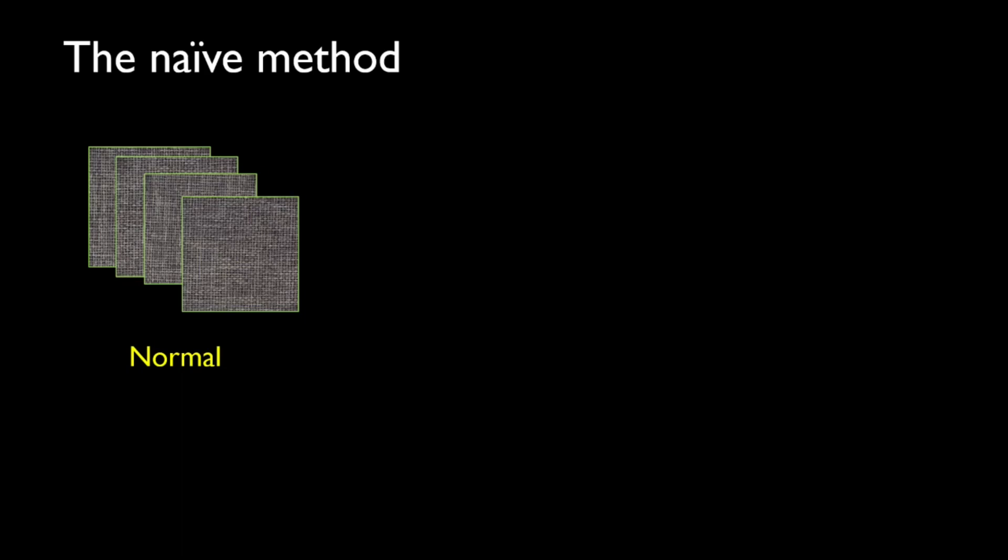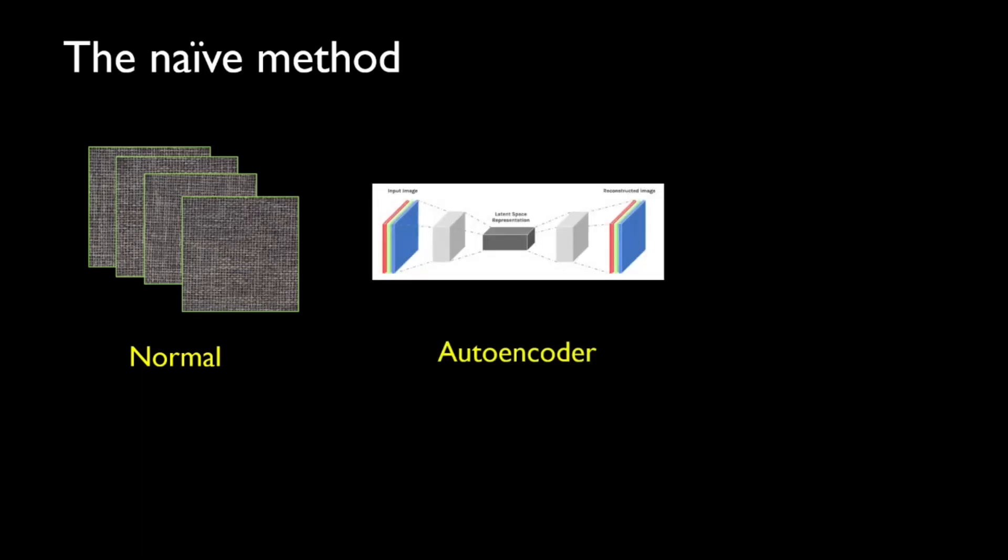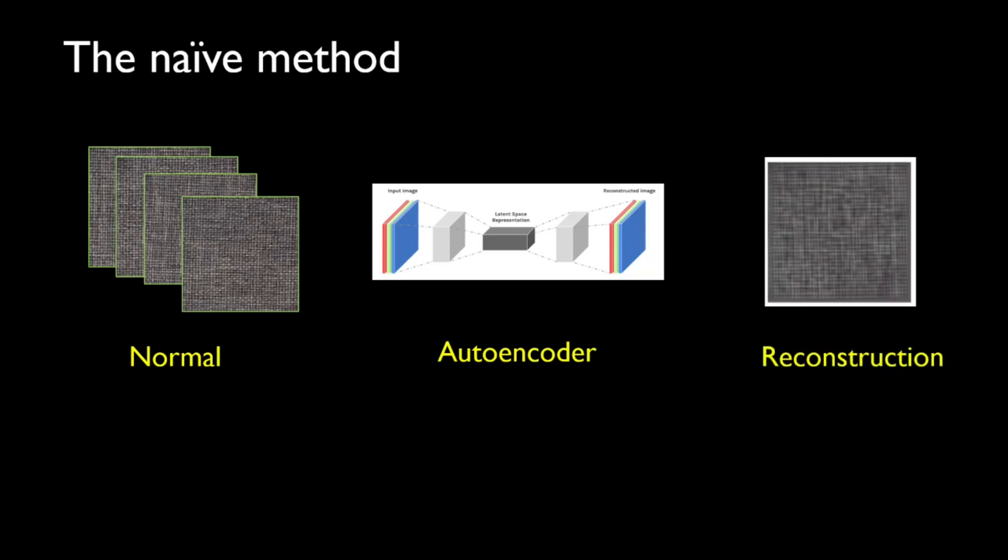So to do the novelty detection, what would be the first method that anyone would go? So I think we all know about autoencoders that autoencoders are trained to reproduce the input. So what we can do is we can train the autoencoder using normal images and we get some reconstruction. It won't be perfect because the smaller the latent space, the worse is the reconstruction.